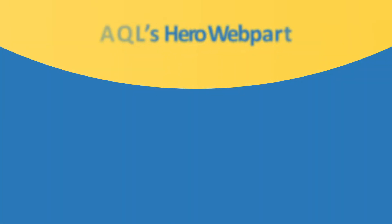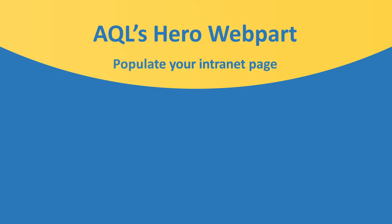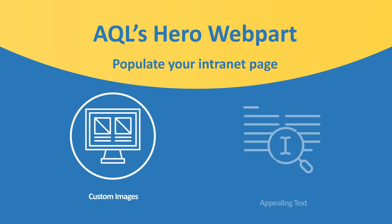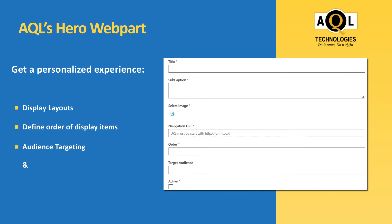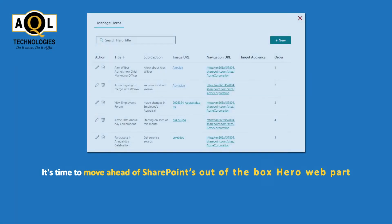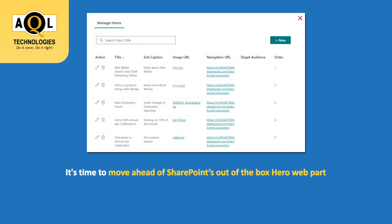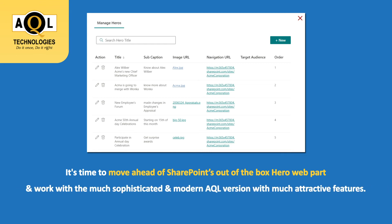AQL's Hero Web Part allows you to populate your intranet page with custom images and appealing text as links to the most important content. Get a personalized experience with options to choose display layouts, define order of display items, audience targeting, and more. It's time to move ahead of SharePoint's out-of-the-box Hero Web Part with pre-populated images and work with the much more sophisticated and modern AQL version with much more attractive features.